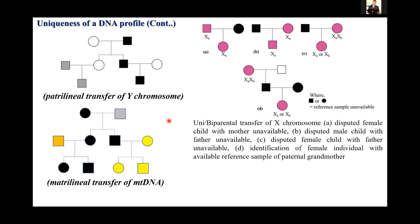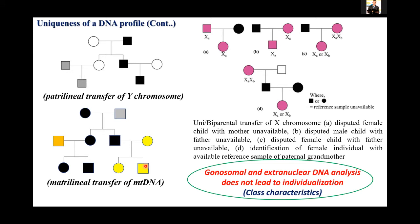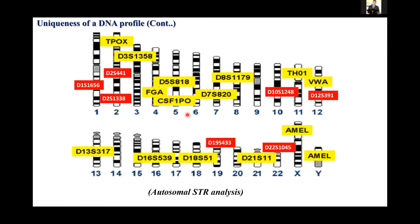Similarly, we also go for mitochondrial DNA analysis. As all of you must know, mitochondrial DNA is inherited in the matrilineal lineage. So again, it cannot be considered to be a unique profile or unique characteristics. Mitochondrial DNA analysis never leads to individualization, so it can be considered as a class characteristic.